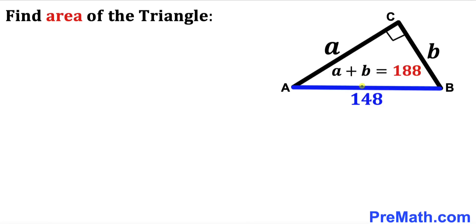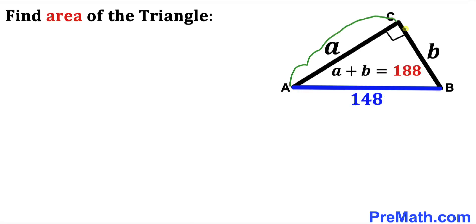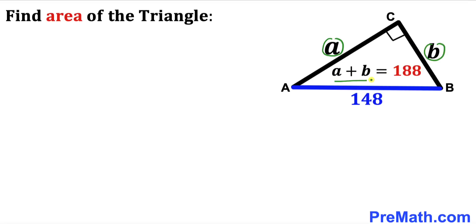Welcome to pre-math. In this video we have got a right triangle ABC such that its side length AB is 148 units and the sum of the other two side lengths is equal to 188 units. In other words, if this side length is a and this side length is b, then a plus b is equal to 188, and our task is to calculate the area of this triangle ABC.